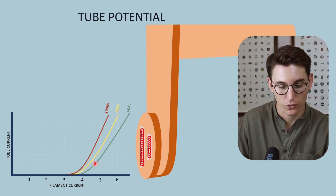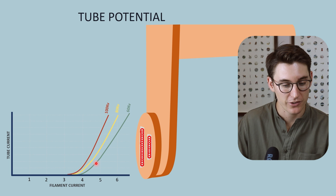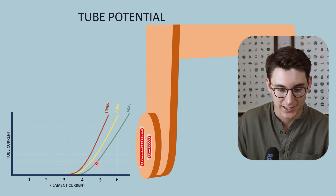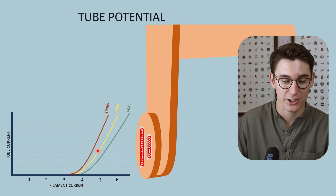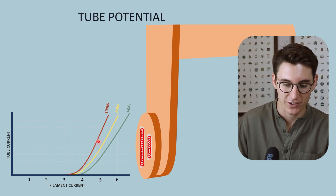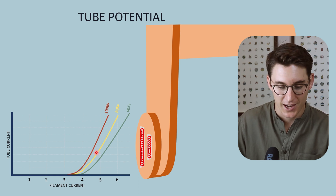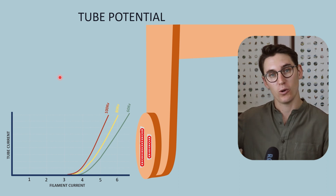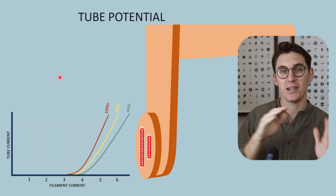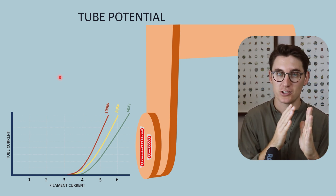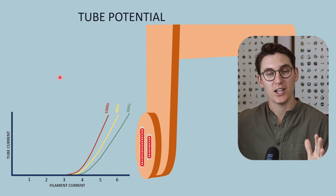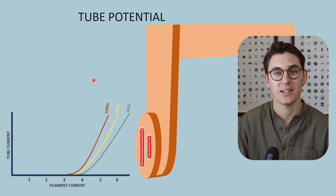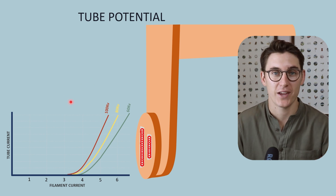At a filament current of 4.5 mA, with a 60 kV tube potential, we have a fairly low tube current — a fairly low number of electrons flowing from cathode to anode. As we increase kV from 60 to 80, we see an exponential increase in tube current. Increasing to 100 kV gives an even further increase. The relationship between kVp and tube current is exponential — normally kVp to the power of two determines the tube current. Increasing kVp has a drastic impact on the number of electrons heading from cathode to anode, and ultimately on the quantity of our X-ray beam.